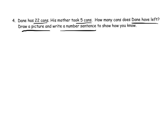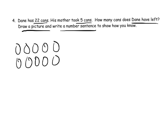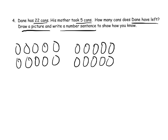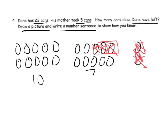First off, a picture. We could draw 22 cans: 1, 2, 3, 4, 5, 6, 7, 8, 9, 10, and 1, 2, 3, 4, 5, 6, 7, 8, 9, 10. That makes 20 and 2. Then we can cross off 5 cans: 1, 2, 3, 4, 5. We can see that these are gone and we can definitely see that the answer is 10 plus 7, which is 17.